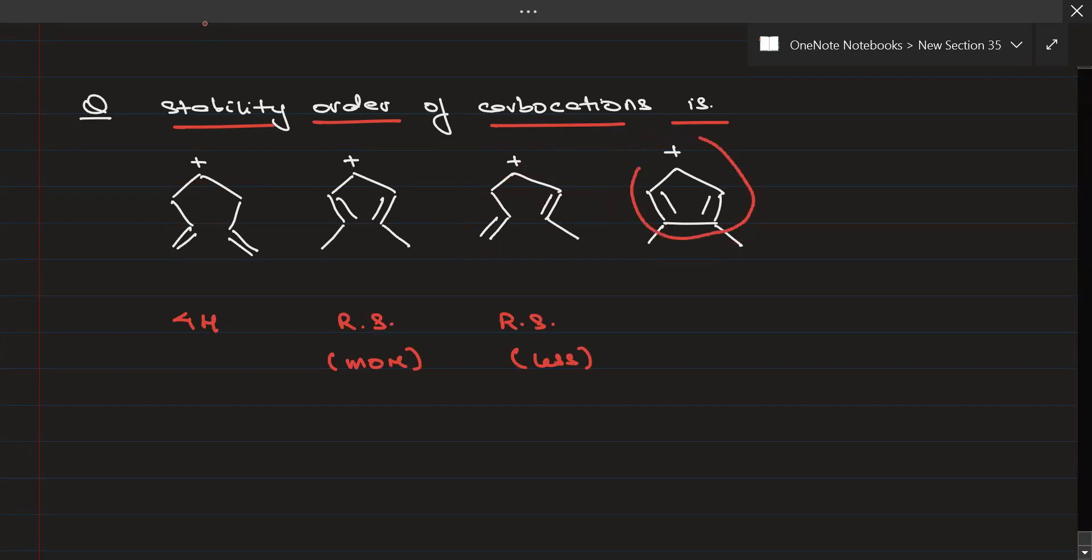Now we come to the last. You have got an anti-aromatic system. Anti-aromatic structures are least stable. You have got 4 pi electrons, it is anti-aromatic and it is least stable.